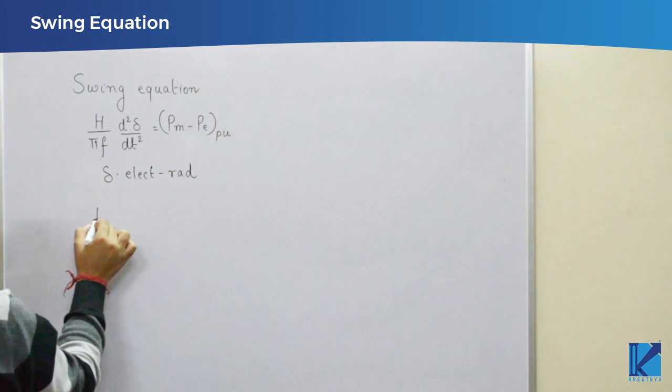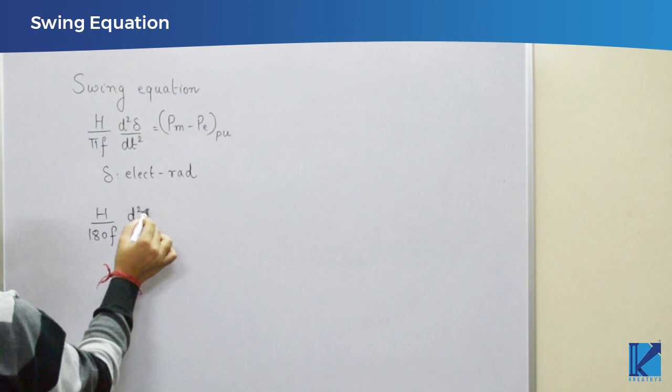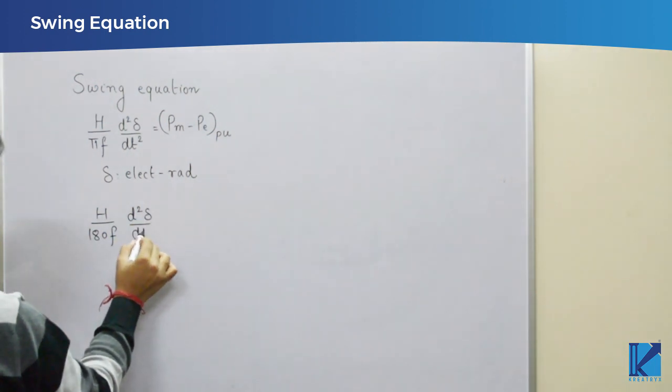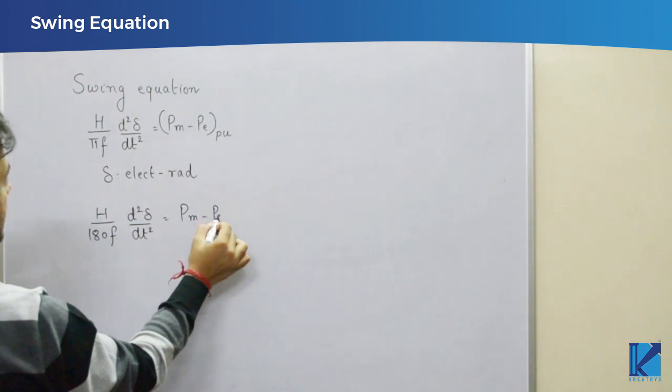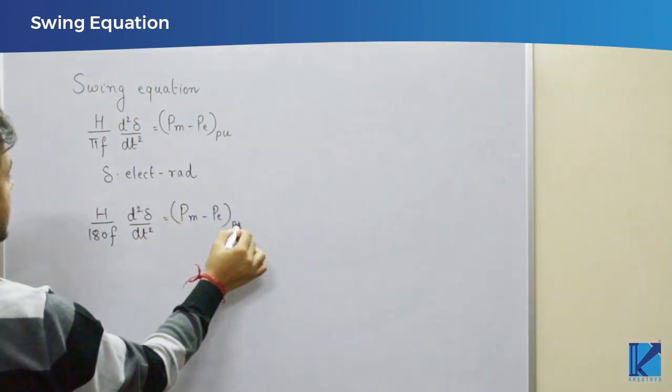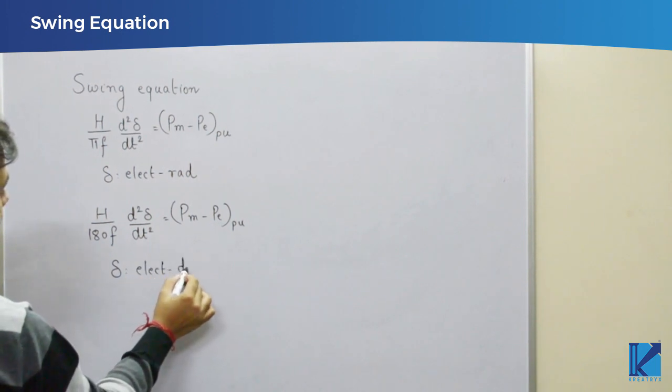Similarly, you can use this formula: d square delta by dt square equals Pm minus Pe in per unit. Here delta is in electrical degree.